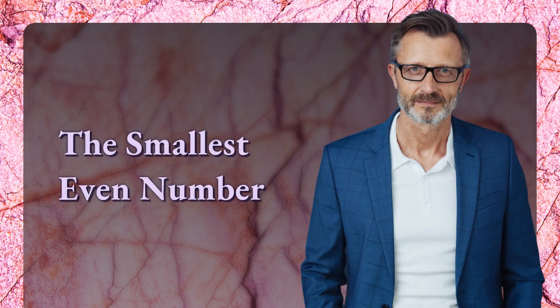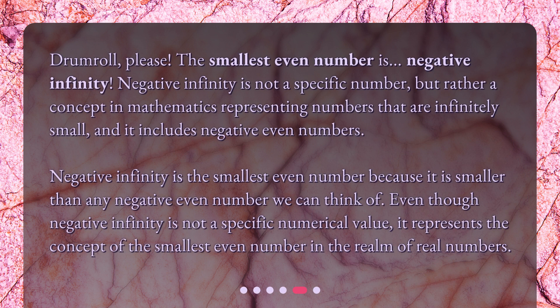The smallest even number. Drum roll, please. The smallest even number is negative infinity. Negative infinity is not a specific number, but rather a concept in mathematics representing numbers that are infinitely small, and it includes negative even numbers. Negative infinity is the smallest even number because it is smaller than any negative even number we can think of. Even though negative infinity is not a specific numerical value, it represents the concept of the smallest even number in the realm of real numbers.